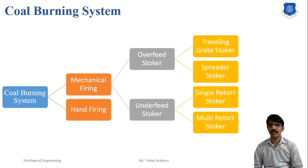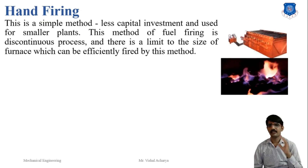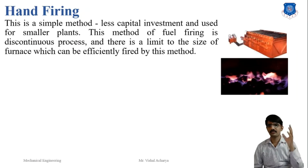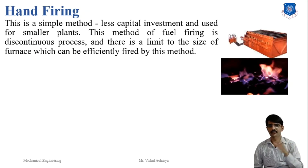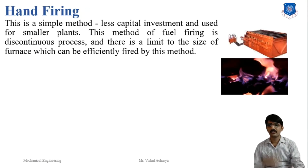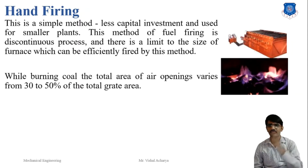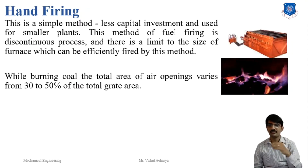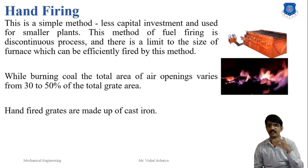The next part is the hand firing method. This is a simple method with less capital investment, used for small power plants. This method of fuel firing is a discontinuous process, and there is a limit to the size of the furnace which can be efficiently fired by this method. The burning coal total open area varies from 30 to 50%, which is a very large area compared to another firing system. The main material of the furnace is cast iron.